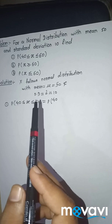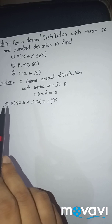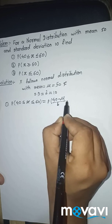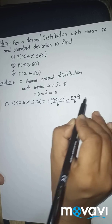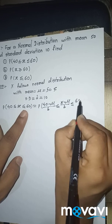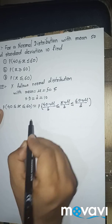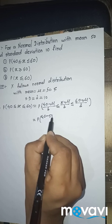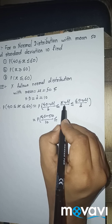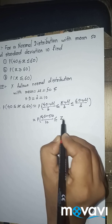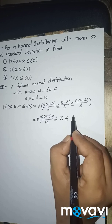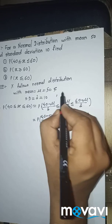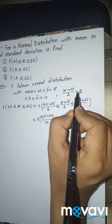First we transform this given distribution into standard normal form. The probability of 40 ≤ x ≤ 60 becomes the probability of (40 − μ)/σ ≤ z ≤ (60 − μ)/σ. Substituting μ = 50 and σ = 10, this becomes the probability of (40 − 50)/10 ≤ z ≤ (60 − 50)/10, where z = (x − μ)/σ is our transformation.